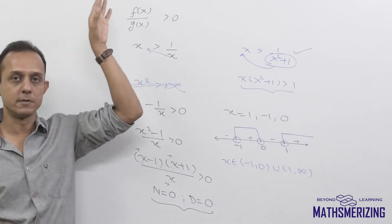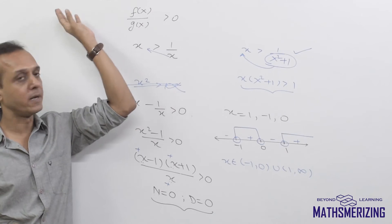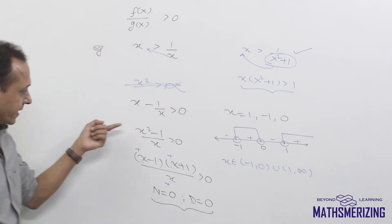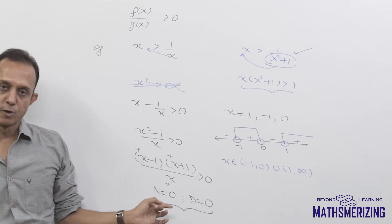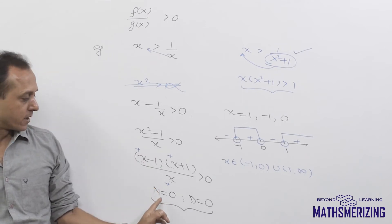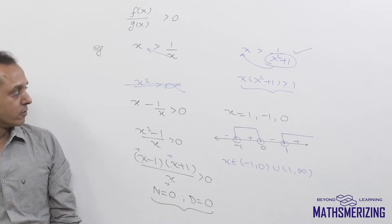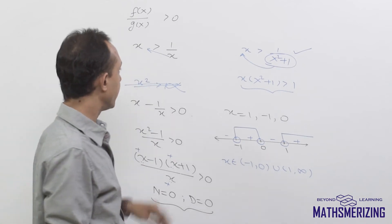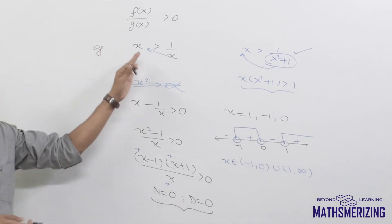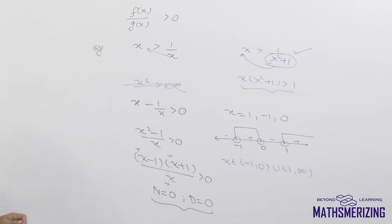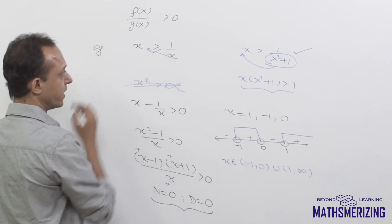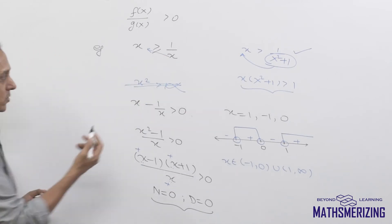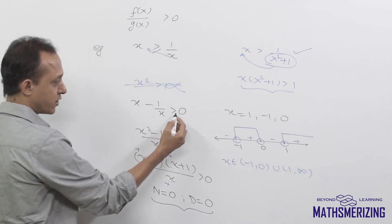There are only two differences between a polynomial inequality and a rational inequality. The first difference is that here we take the roots of both the numerator and the denominator. The second difference arises when there is an equality sign — for example, if the question is x squared is greater than or equal to 1 by x.